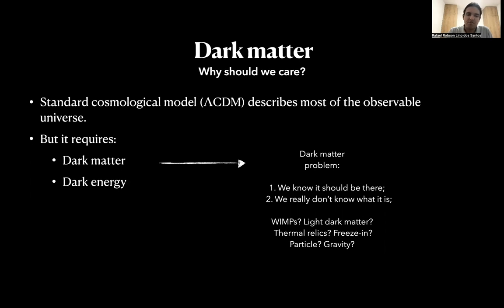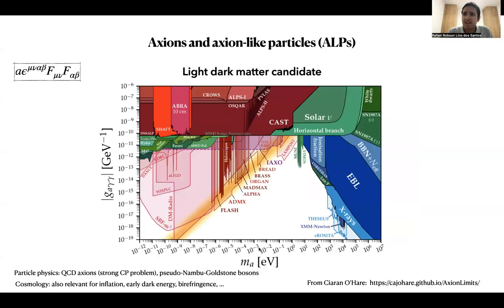We know that our universe contains dark matter and dark energy, but we really don't know what they are. And one candidate for dark matter is axions, or axion-like particles. They are basically described by this sort of interaction here, where the axion would be a pseudo-scalar field and F_μν would be the field strength of a certain gauge field.